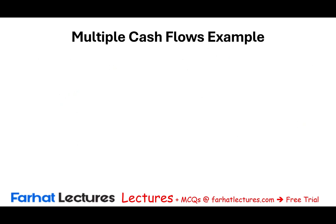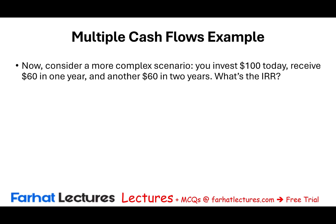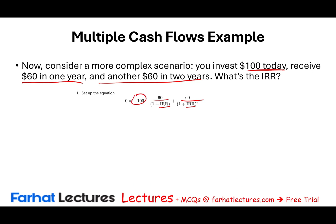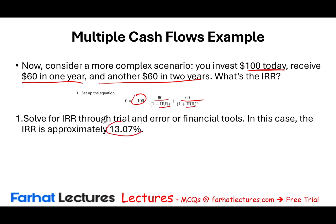Now consider a more complex scenario with multiple cash flows. You invest $100 today, receive $60 one year from now, and another $60 the year after. We set up the formula: sum the cash inflows discounted at some rate, subtract the initial investment, and find where NPV equals zero. Using Excel or a financial calculator, the answer is 13.07% — this project has an internal rate of return of approximately 13%.